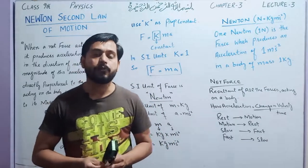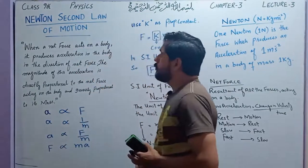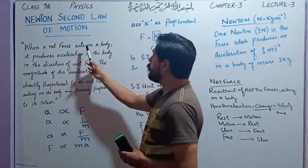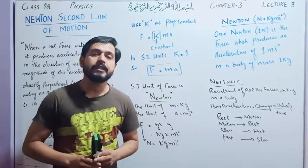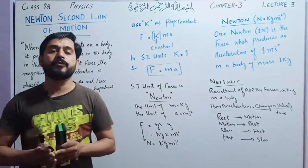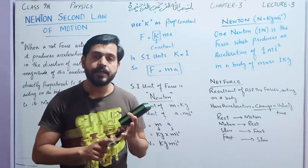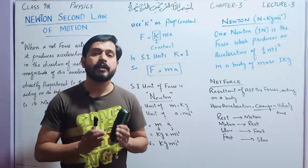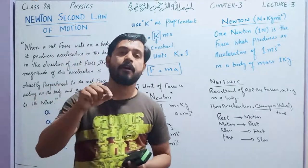Newton's second law tells us: if a net force acts on a body, what effects or impacts will occur? First of all, we will discuss the definition of Newton's second law of motion. When a net force acts on a body — net force is a resultant force, it is a single force which we gain after the summation of all forces acting on a body. When more than one force acts on a body in multiple directions, the resultant of all those forces gives us one single force, and that single force is called the net force.